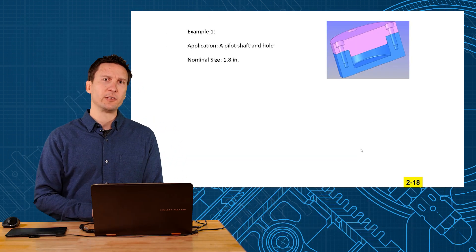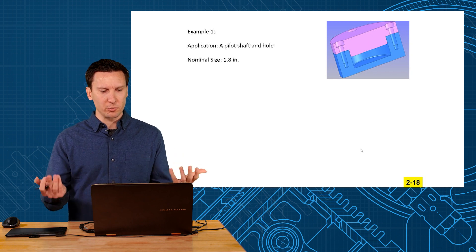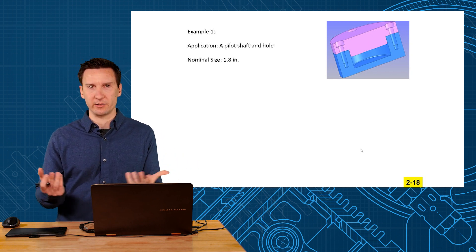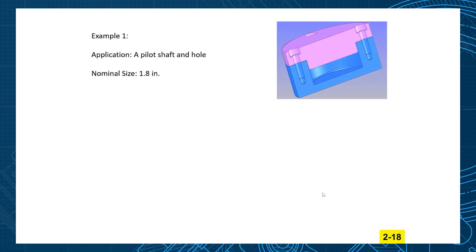Let's show how these fits would be used on a drawing. First we'll look at an application of a pilot shaft and a hole and we want our nominal size to be about 1.8 inches. What type of fit do you think we would pick for this type of application?